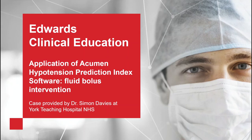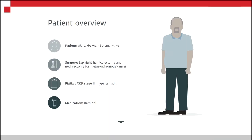Welcome to Edwards Clinical Education. Today we're looking at the application of Acuin Hypertension Prediction Index software, and in this scenario, looking at a fluid bolus intervention. Our patient today is 69 years old and is having a laparoscopic right hemicolectomy and also a nephrectomy for a metasynchronous cancer. He has kidney disease stage 3 and hypertension, and medication-wise only takes Ramipril.